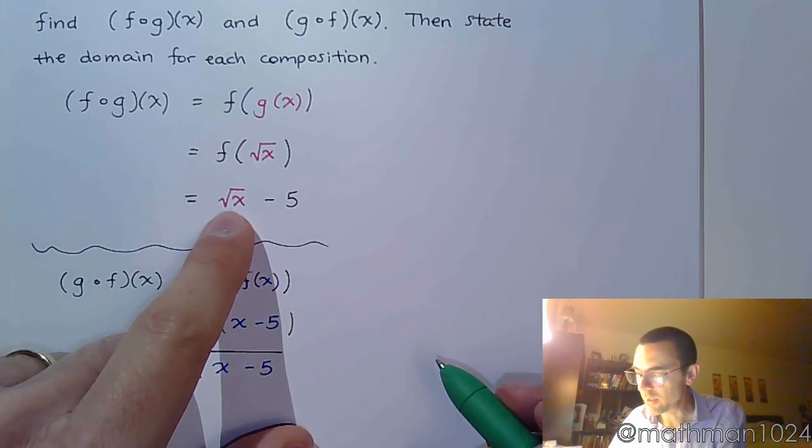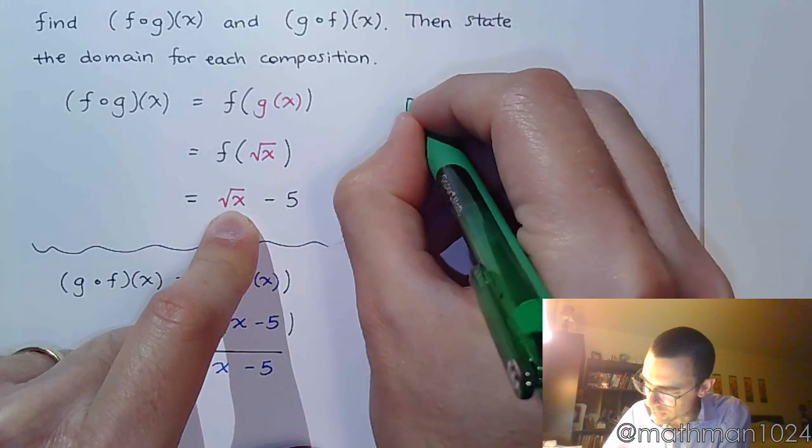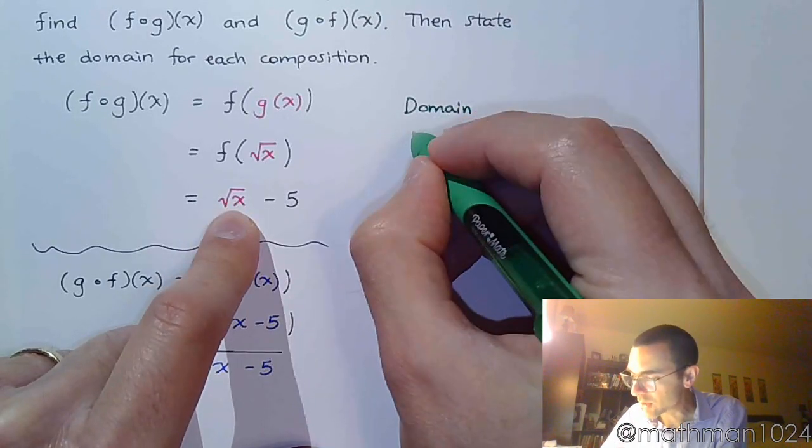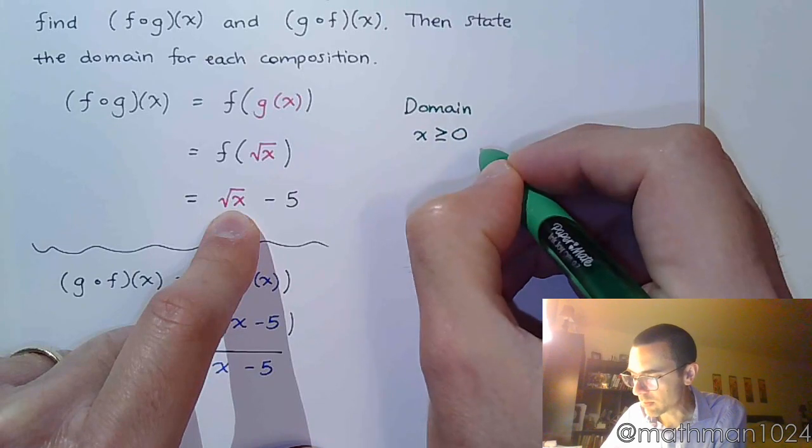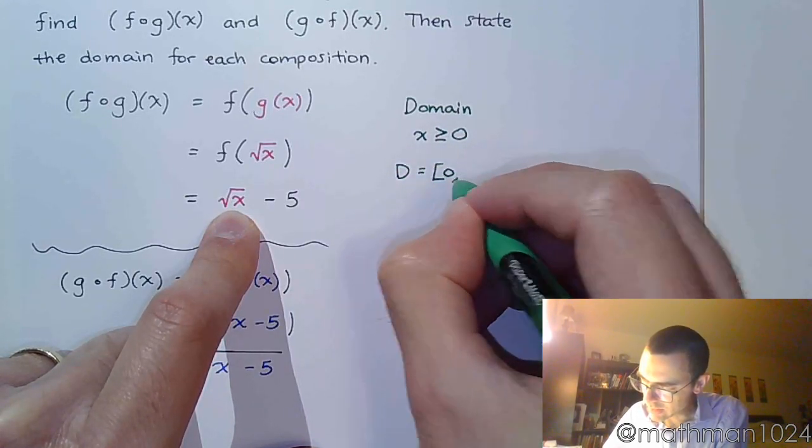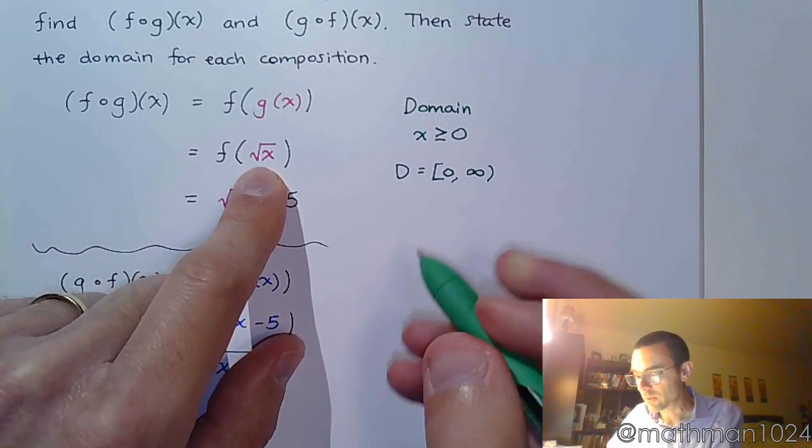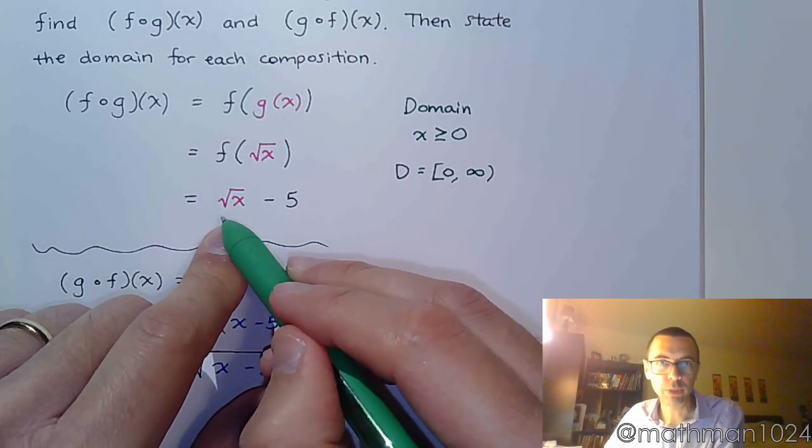So when I look at the domain for this, I've got a square root, so I know there's a limitation here. For the domain for this, we have to understand that this radicand has to be greater than or equal to 0, which means that my domain is going to be bracket 0 to infinity. So this guy had already that limited domain, and you plug it in here, he's going to keep that limited domain.